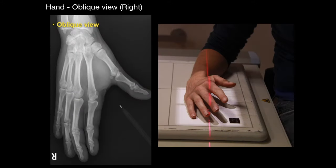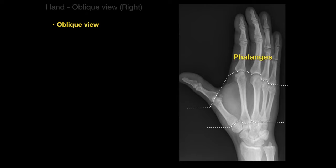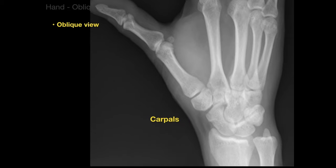The oblique projection of the hand is also good for looking at overlap. We can see the phalanges numbered one through five, and the metacarpals one through five, as well as the carpal bones, radius, and ulna. Zooming in on the carpal bones, we can identify them using our mnemonic — Sally left the party, there's the pisiform, take Kathy home — all the carpal bones outlined in this oblique view.